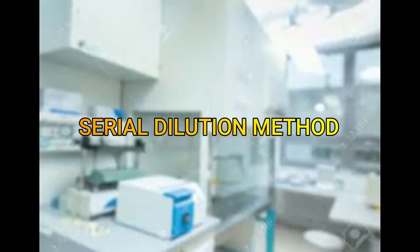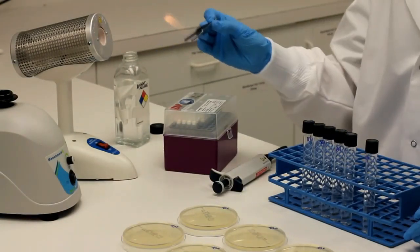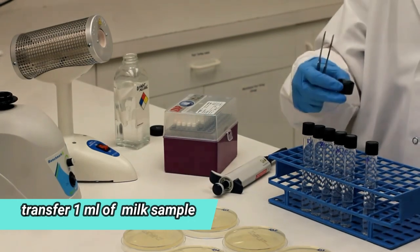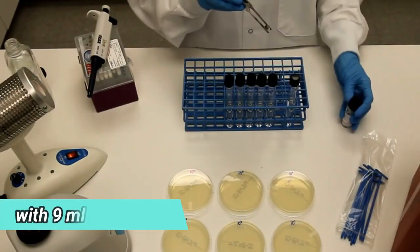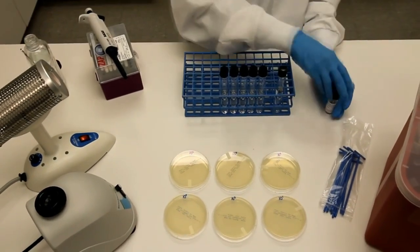Serial dilution method. First, before we start the experiment, we label the dilution factor on a tube. In this experiment, we transfer 1 ml of the milk sample into test tube with 9 ml of distilled water. Then, we use the vortex to make it homogeneously.